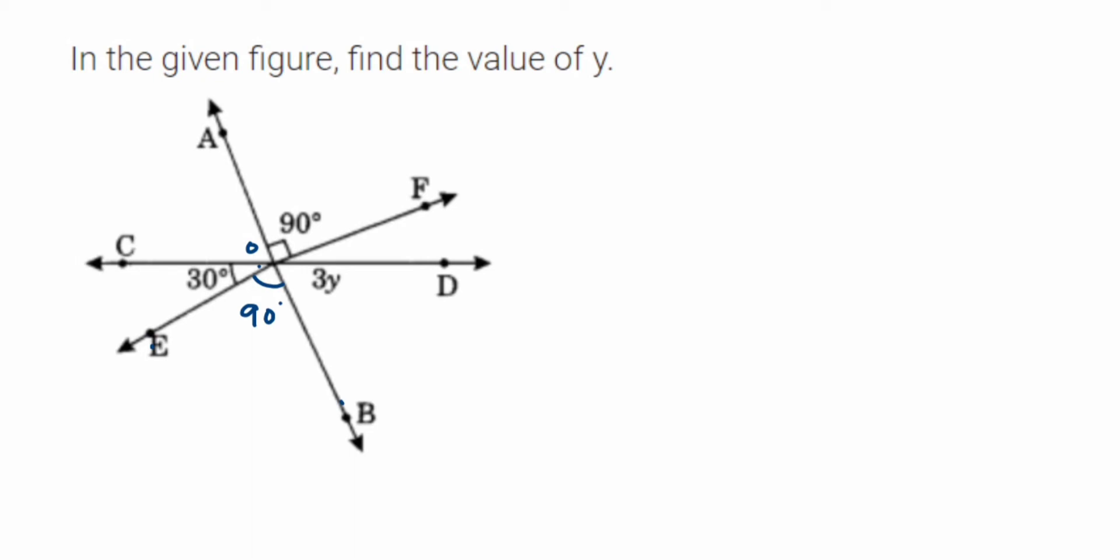Let me introduce a new variable. Suppose this angle is equal to z. There is no variable given here, that's why I've taken z. So we have to find out first the z value and then we're going to find the value of y.